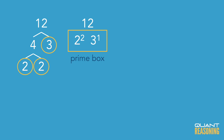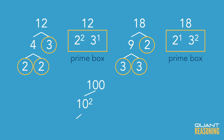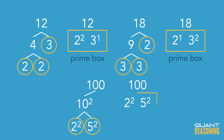Just a couple more examples. 18 is 3 times 3 times 2, so its prime box is 2 to the power of 1, 3 squared. One more: 100 is 10 squared, and 10 is 2 times 5, so the prime box of 100 would have 2 squared and 5 squared.